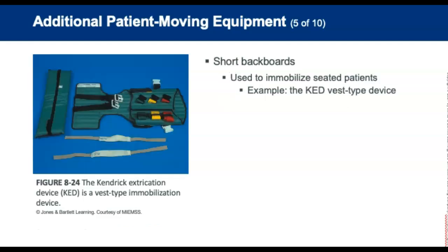Short backboards are used to immobilize the head, torso, and neck of a seated patient with a suspected spinal cord injury until the patient can be moved to a long backboard. Short wooden backboards have mostly been replaced by a vest-style device — the KED, or Kendrick Extrication Device — which can be seen in the photo on the slide.